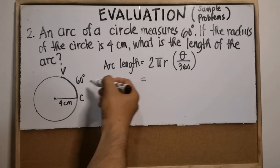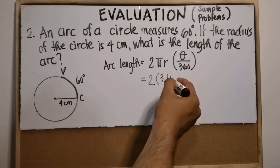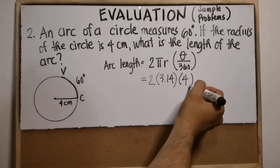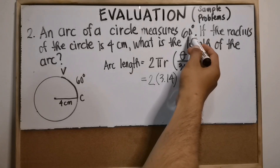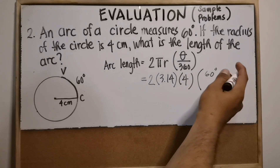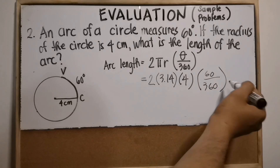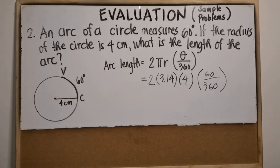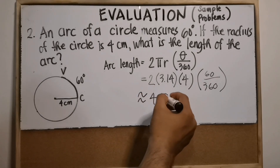Substituting the values: arc length of VC equals 2 times 3.14 times 4 centimeters times 60 degrees over 360. Simplify by canceling degrees over 360. Multiplying everything together, you get approximately 4.19 centimeters.